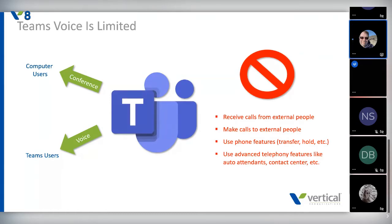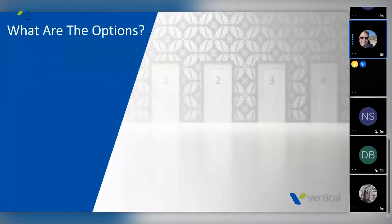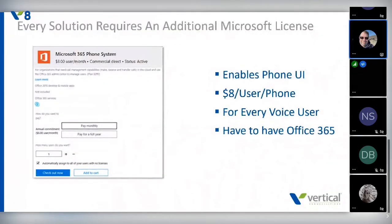It's important to bring voice and Teams together and make this all work. Now let's talk about those options. Every solution I'm going to discuss will have an additional cost. Microsoft has a phone system license or a common area phone license that costs about $8 per user per month. Every single user using voice on their system, regardless of the option they choose, will have to pay more on their Microsoft bill.